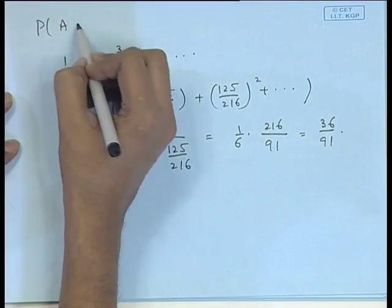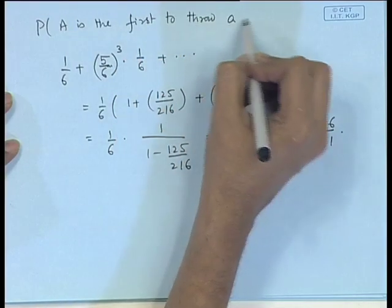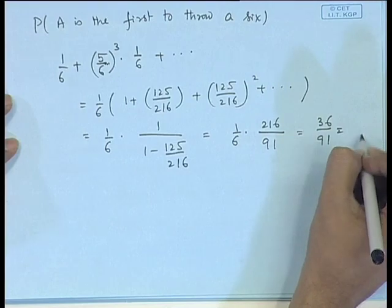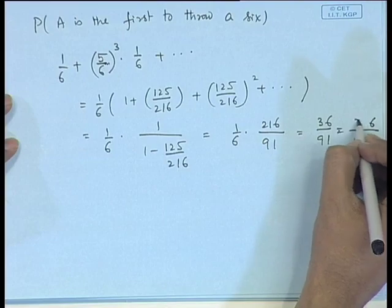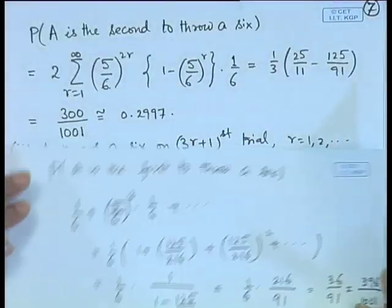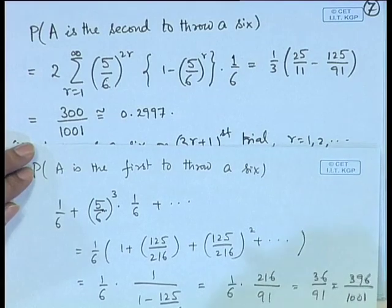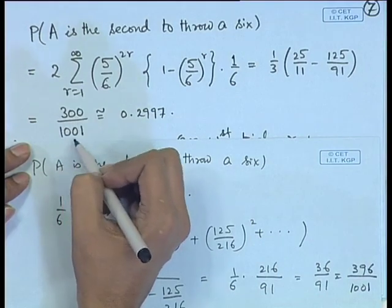So the probability that A is first to throw a 6 is 36/91 = 396/1001. Comparing: A is first with probability 396/1001, and second with 300/1001 — the probability is reduced, as expected, since A throws first in the order.